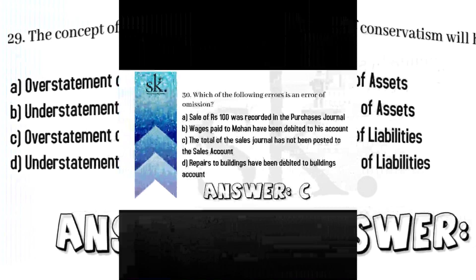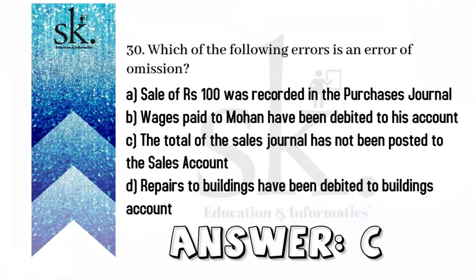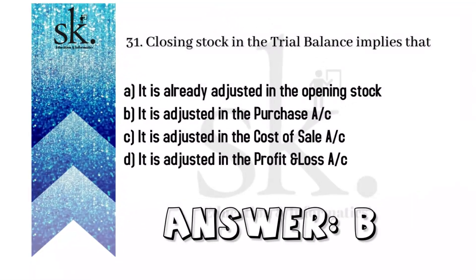The next question: which of the following errors is an error of omission? Omission means when you have missed recording the transaction in the concerned account. The answer will be C, where the total of the sales journal has not been posted to the sales account and has been completely omitted.